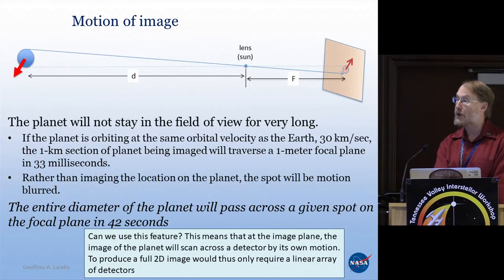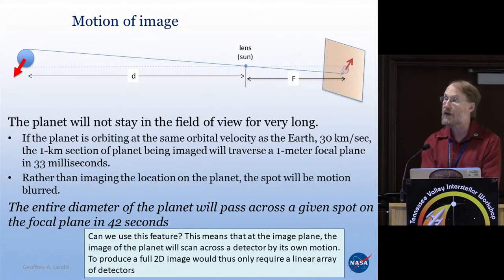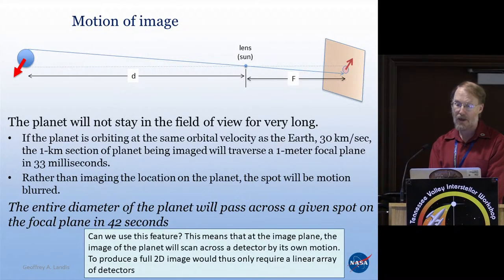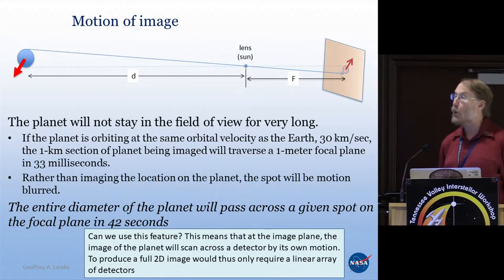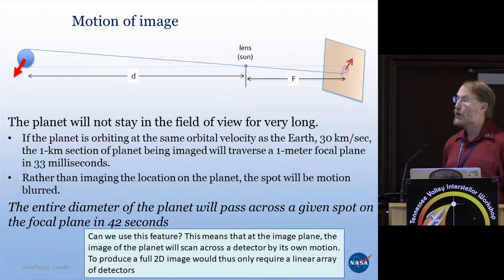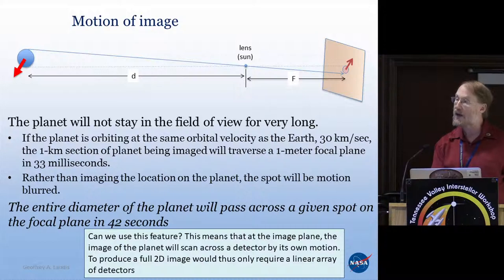If you were talking at the 100 light year distance, it would be a lot slower — 420 seconds. But that's still not very long. The first thing is you might be able to use that feature. Because the planet in one dimension rasters by itself — it moves across the focal plane. So now we only need a line detector in order to raster the full planet, because the planet will move in the second dimension. So it's a bug — 42 seconds is not very long. But it's also a feature that we might be able to use.